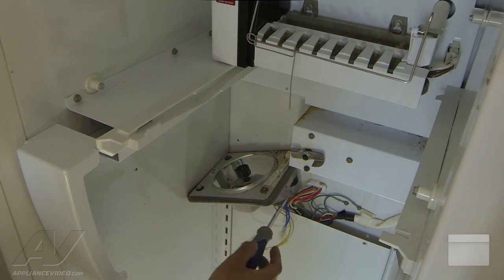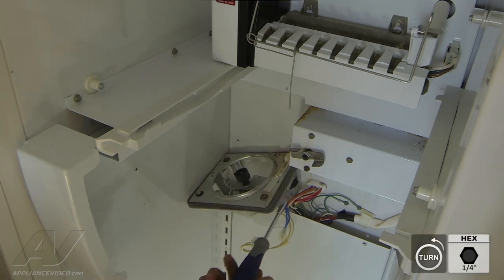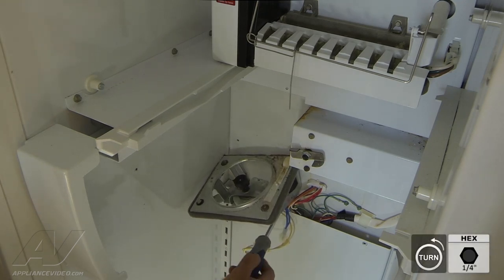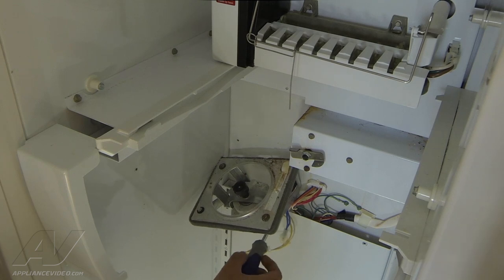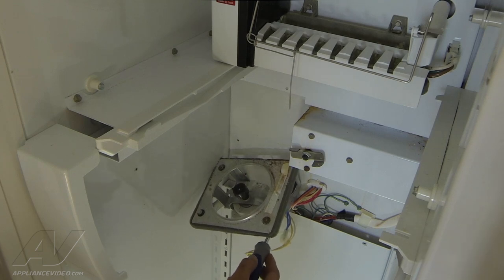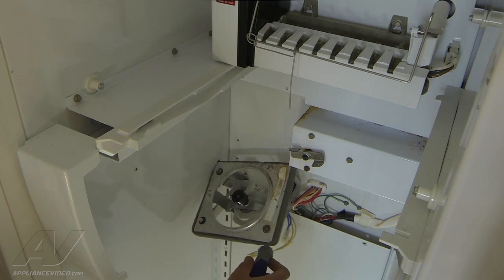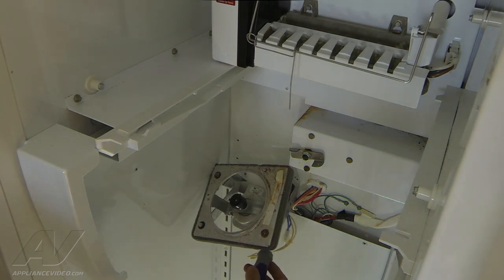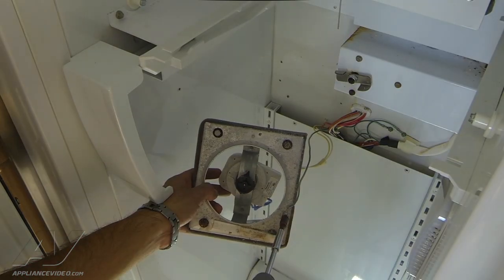Once the zip tie has been cut, we can remove the last quarter inch screw that is securing the fan bracket into place. Once that screw is removed, there is one more ground screw with the ground wire attached to the fan bracket assembly that we will have to remove. Now we're going to remove the quarter inch ground screw.